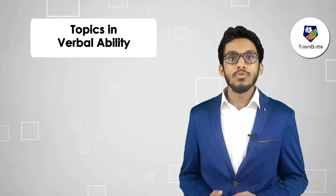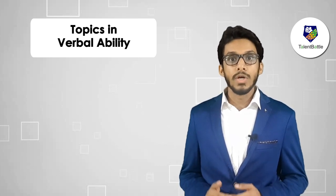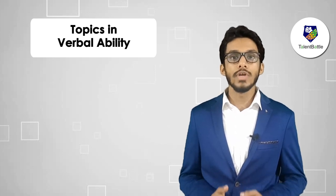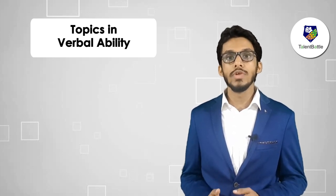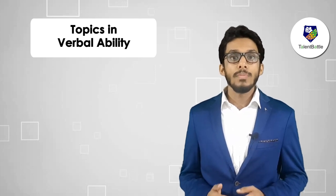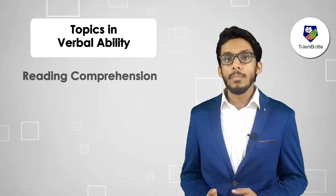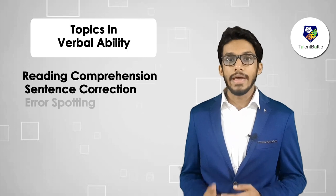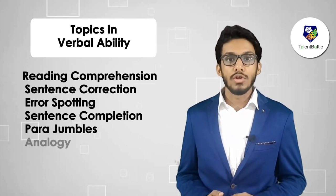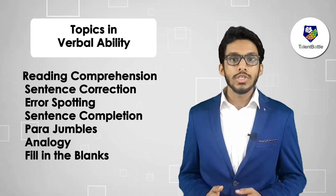For Infosys verbal ability, English is the toughest part of the Infosys test — not only because of the time pressure and number of questions, but also because of difficult questions usually asked from GRE and CAT level. The main topics are reading comprehension, sentence correction, error spotting, sentence completion, para jumbles, analogy, and filling in the blanks.